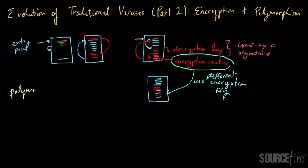So polymorphism. It literally means taking on multiple shapes. And the idea behind polymorphism was that each virus would carry with it a mutation engine.